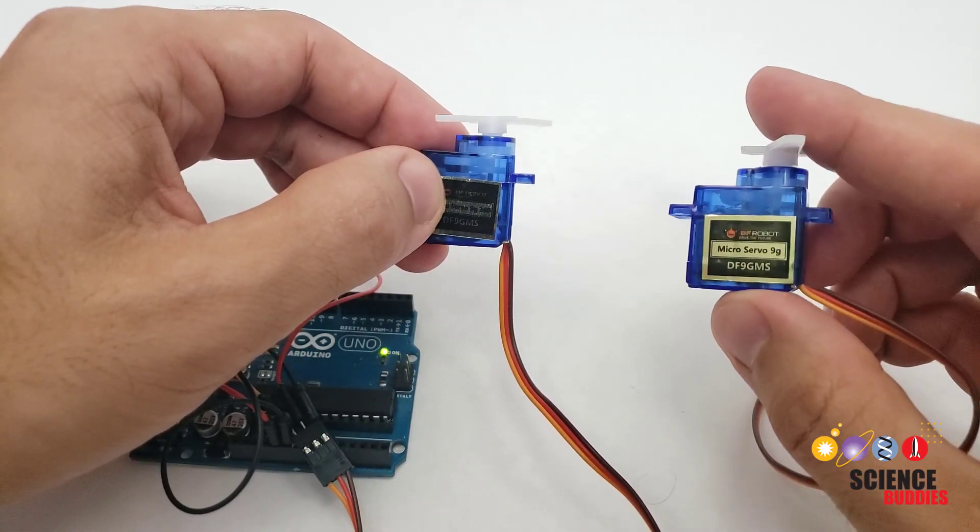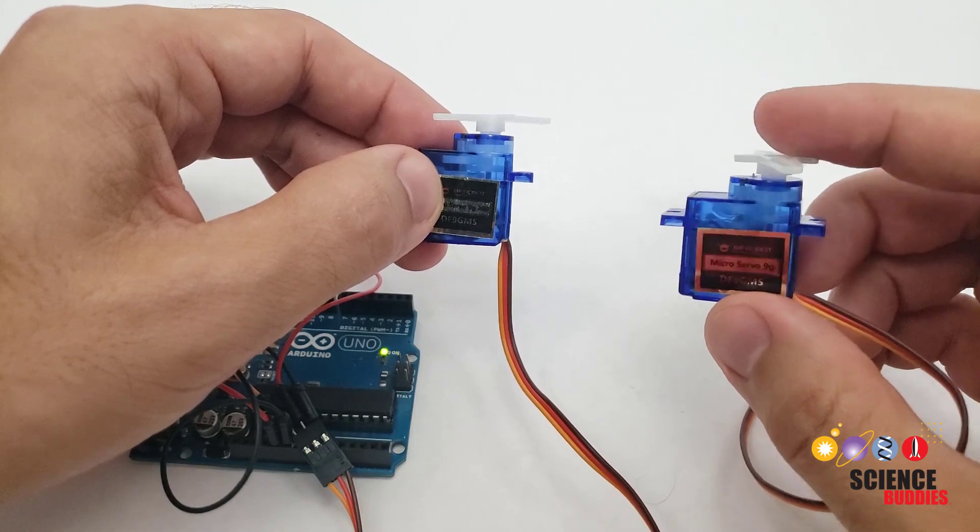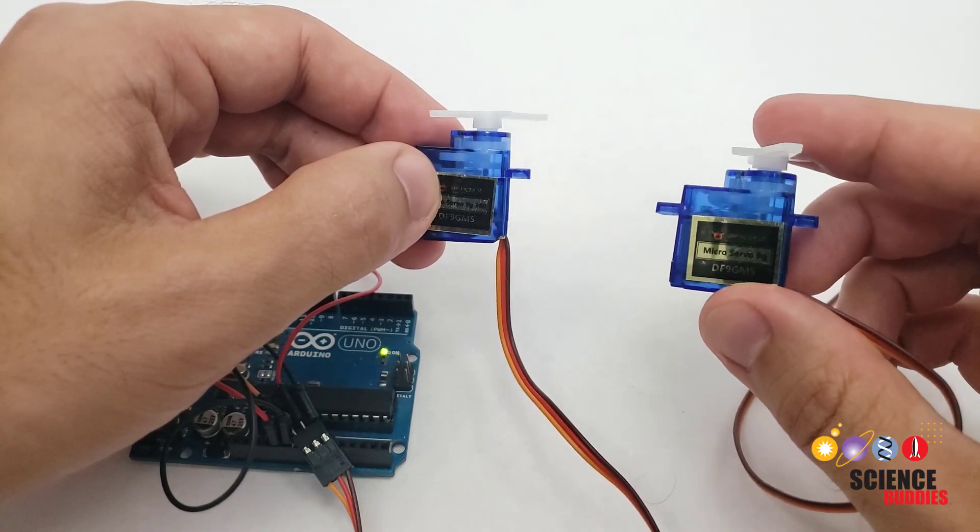You cannot mix and match and get both types of functionality out of a single motor. If you want to control the position, you need to use a positional servo, in which case, if you send it a 90, it will rotate to 90 degrees.